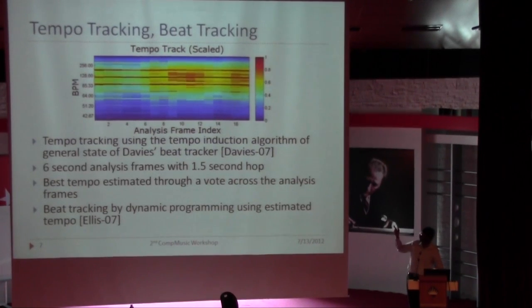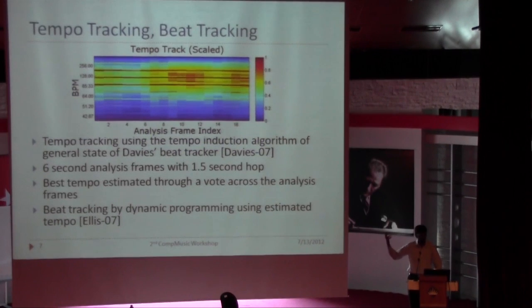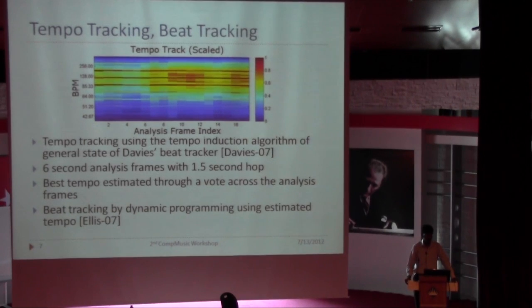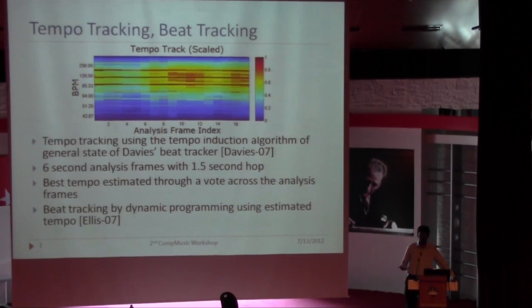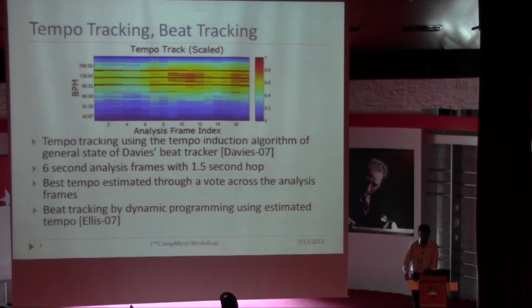The tempo track is obtained from the onset detection function using an autocorrelation-based method. It's weighted, so we can see tempo lines at different levels. Since there are multiple tempos which can be perceived in a song, it shows them at different levels, and based on the weighting function we choose the maximum. This weighting function decides what metrical level is chosen for tracking the beats in a particular song.